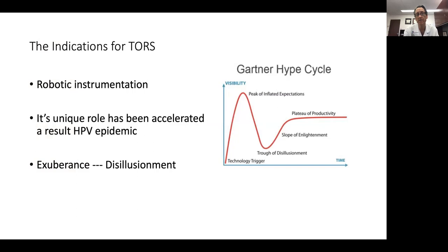When it comes to robotics, having been around for quite some time, when this first came out we had exuberance and that hype cycle where every case and every patient was one that should be treated with robotic surgery. That was then met with a trough of disillusionment where maybe it wasn't for everybody and maybe there were some limitations. And we've slowly come along the slope of enlightenment to somewhere settling in the middle. Robotic surgery is an instrument, just like any other instrument, and its unique role has been accelerated because of the HPV epidemic.